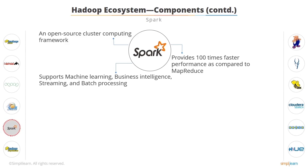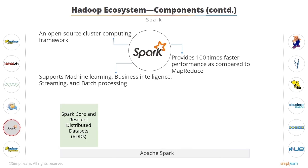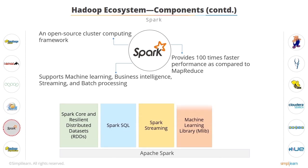Spark has the following major components: Spark Core and Resilient Distributed Datasets (RDD), Spark SQL, Spark Streaming, Machine Learning Library (MLlib), and GraphX. Spark is now widely used, and you will learn more about it in subsequent lessons.